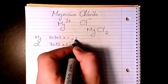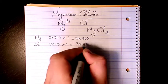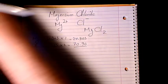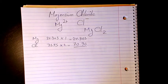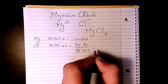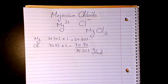That makes it 24.305 and here we have 70.9. And now I need to add these two, is going to be 24.305 plus 70.90, that makes it 95.205 grams per mole. So that's the molar mass or molecular weight of magnesium chloride.